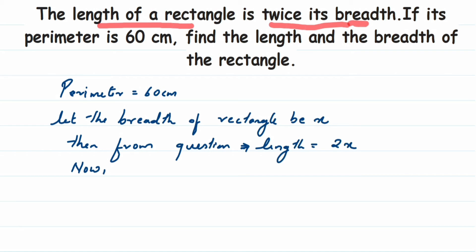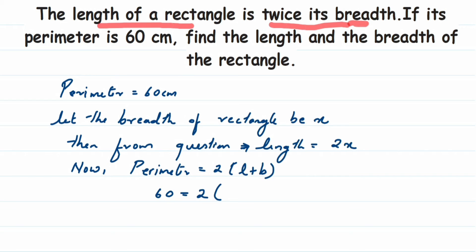Now we're going to write down the formula for perimeter. The perimeter is 2 into (l + b) in the case of a rectangle. We know the perimeter is 60 centimeters, and we have assumed length is 2x and breadth is x. Substituting those values: 60 is equal to 2 into (2x + x).